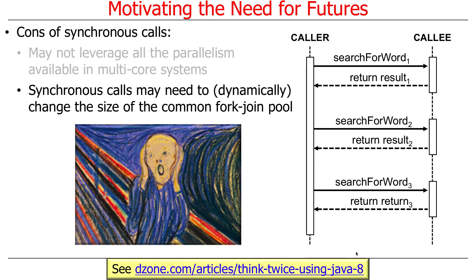Another problem specific to Java parallel streams is that synchronous calls may require you to dynamically change the size of the common fork-join pool. Parallel streams try to use a single common pool to maximize thread utilization, which is good. But if you don't size the thread pool correctly, you may have to resize it — either larger or smaller — and that is tedious and error-prone.